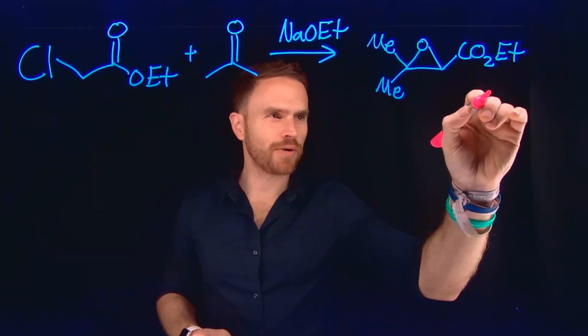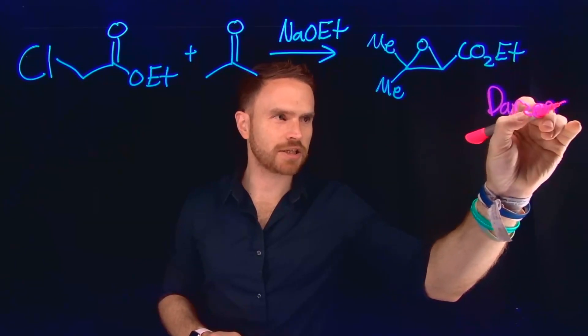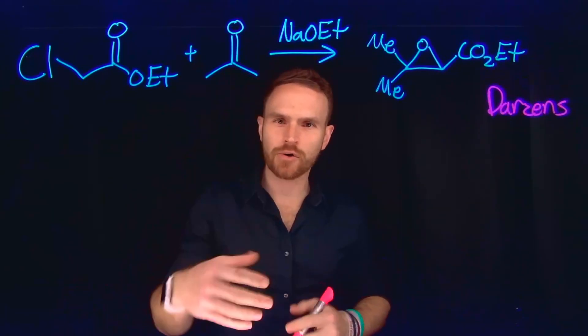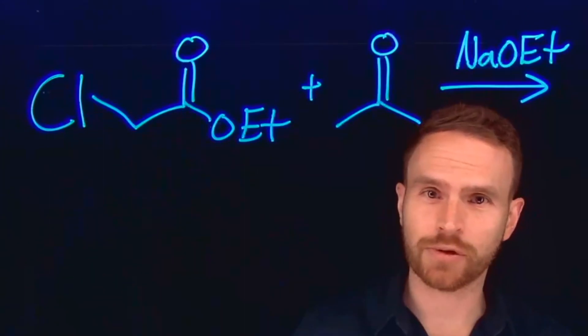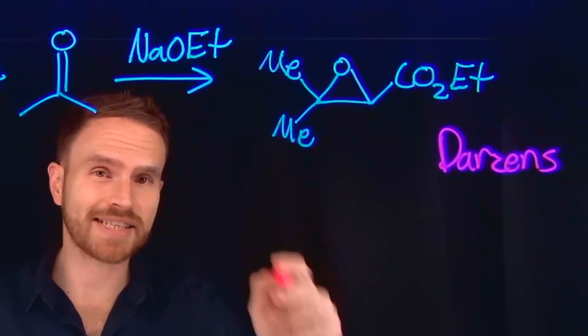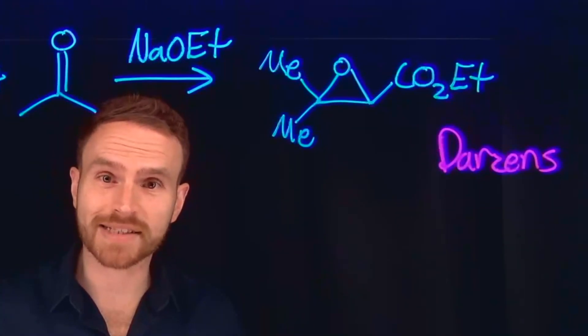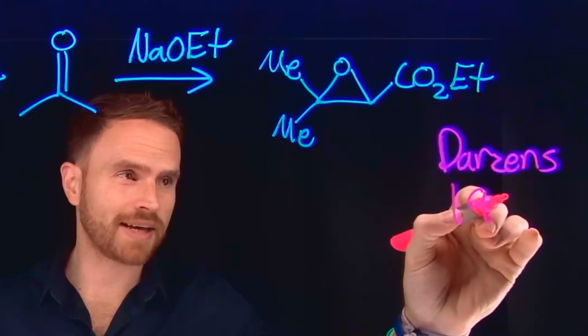This reaction is what's known as a Darzen's reaction. A Darzen's reaction is any time you take a ketone or an aldehyde and react it with an alpha-haloester in the presence of a base to form an alpha-beta epoxy ester, or also what's known as a glycitic ester. And this reaction was first discovered way back in 1904.